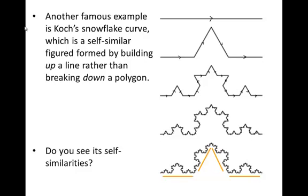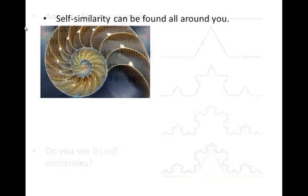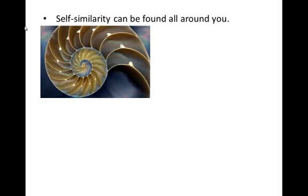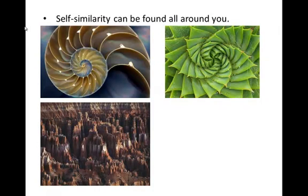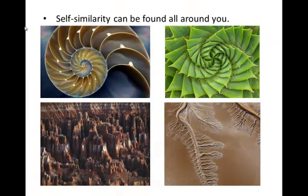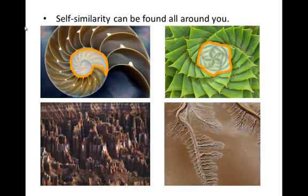It seems like I've been going out of my way to make elaborate and weird examples of self-similar figures, but believe it or not, it's all around you. It's in the shells of nautiluses, it's in the folds of plants, or in mountain ranges and rivers. At each step of the way, the whole shape can be seen to be similar to some small part of it. In the case of the mountain range, the entire mountain range is reflected right here, or right here.